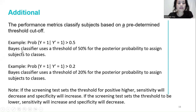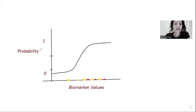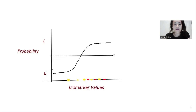When we set the threshold at 0.5, Bayes' classifier uses a threshold of 50% for the posterior probability to assign patients to classes. If we were to set the threshold at 0.2, Bayes' classifier uses a threshold of 20% for the posterior probability to assign patients to classes. In these two examples, using logistic regression as a binary classifier — with Y-axis as probability from 0 to 1 and X-axis as biomarker values — with eight patients, three disease-positive and five disease-negative: if my threshold is at 0.5, any subjects falling above that level would be classified as positive.